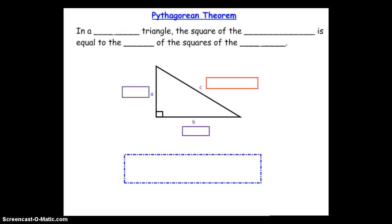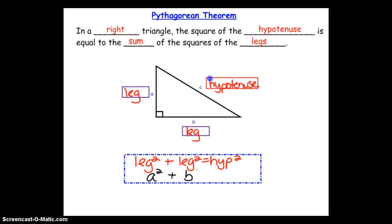So at this time you want to get out a piece of notebook paper and write down the Pythagorean Theorem and understand it in words as well as in symbols. So in a right triangle, and the key is that it has to be right, it's not an obtuse or acute, but in a right triangle, the square of the hypotenuse is equal to the sum of the squares of the legs. There is your hypotenuse. Each of these are your legs. So a leg squared plus a leg squared is equal to the hypotenuse squared. A squared plus B squared is equal to C squared.